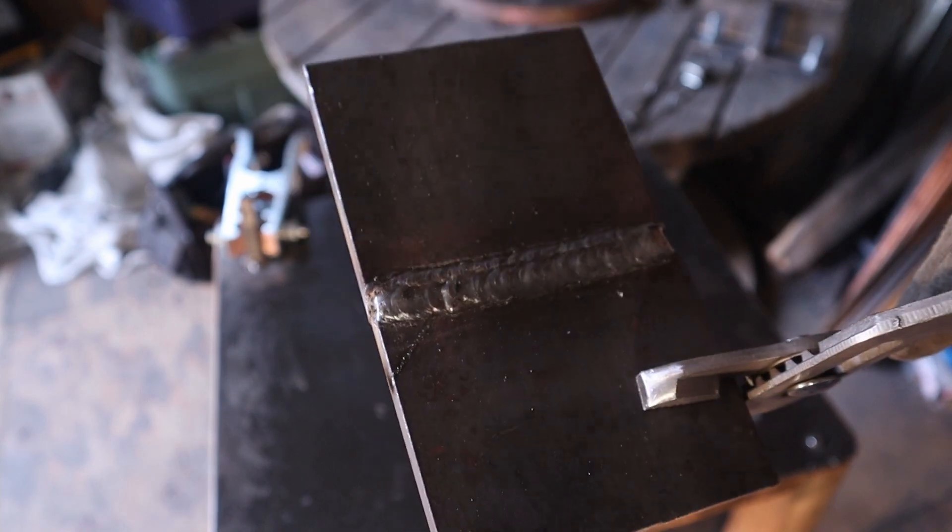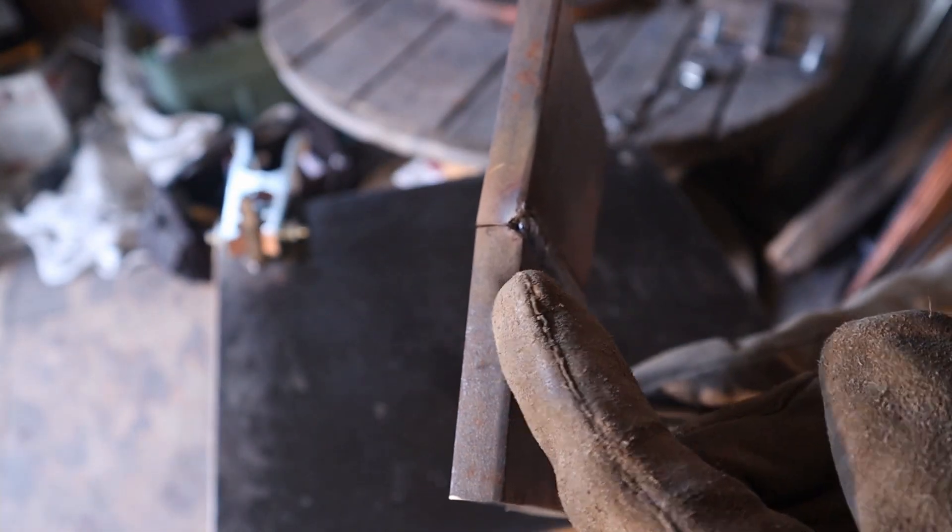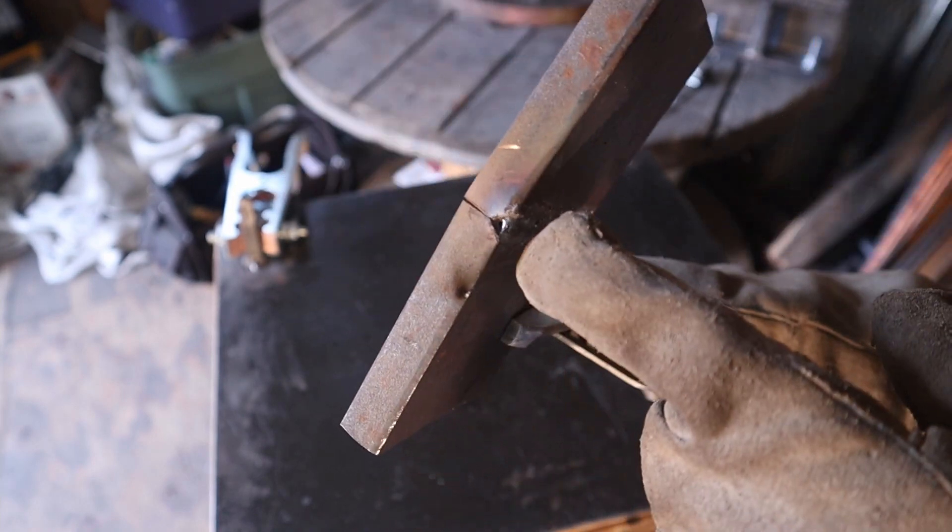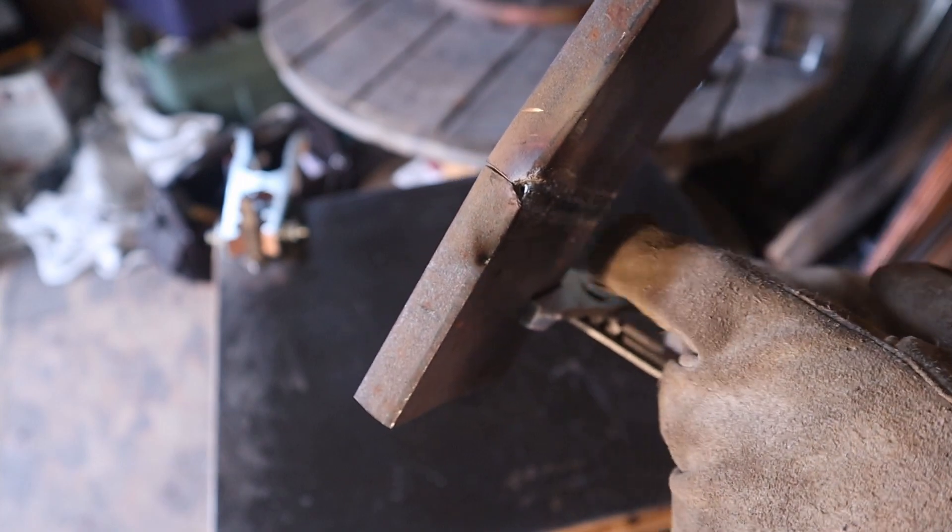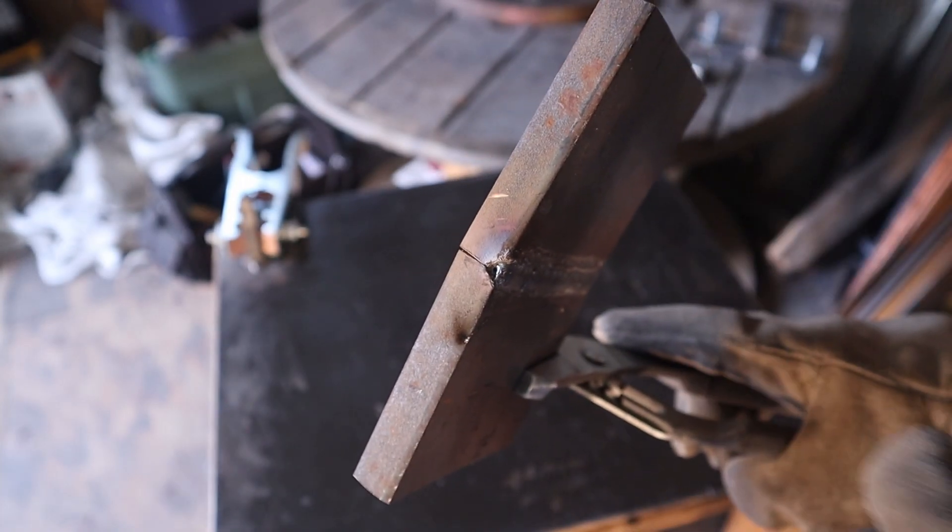And now that both of these pieces are welded on this side, I'm going to take it to the other side. I'm going to grind out the back side until I see that first weld I put in, and then I'm going to bevel each piece like I did on the first side. And once I have that side beveled, I'm going to start welding that side together.